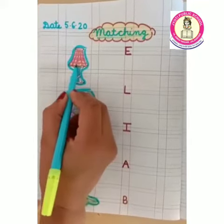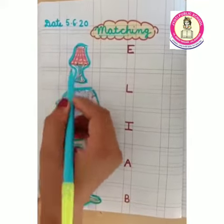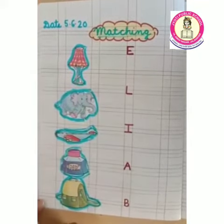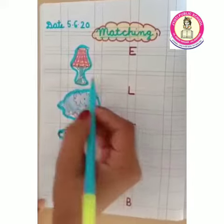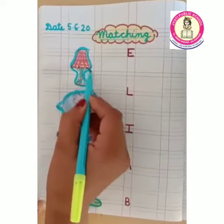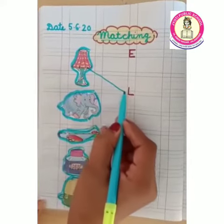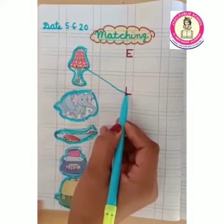First is L. Find the letter L. Good. L says Lamp.